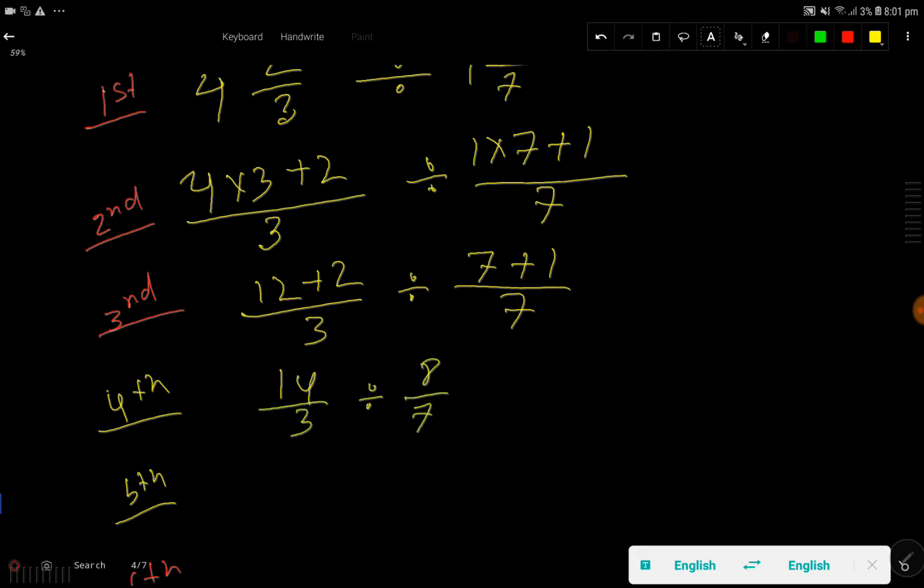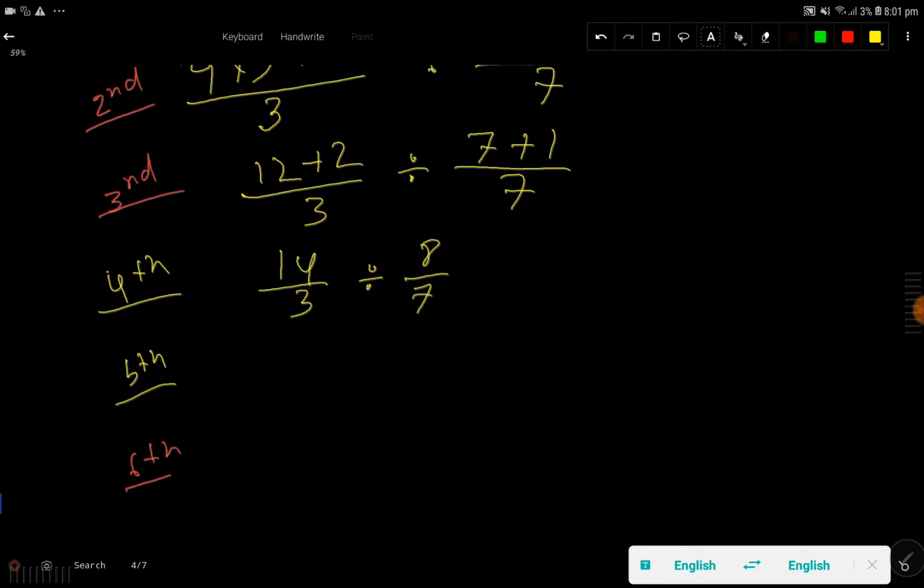14 over 3, this division sign becomes multiplication by the reciprocal of this fraction, 7 over 8. In the sixth step, we have 14 times 7, that is top to top, then 3 times 8, bottom to bottom.